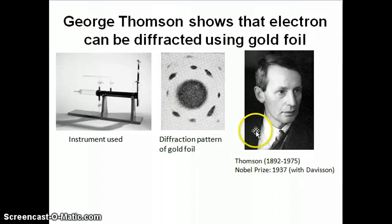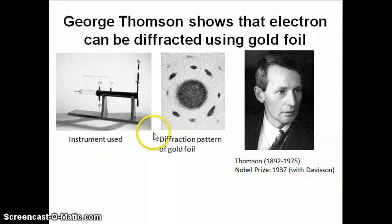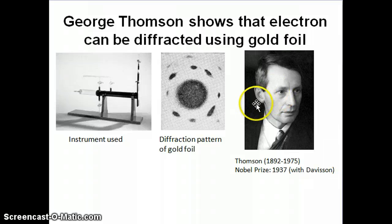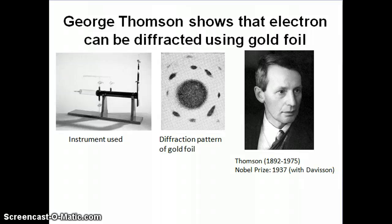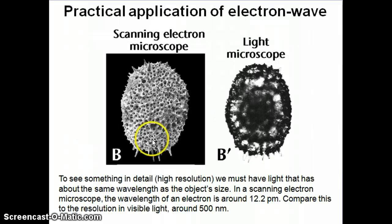As an aside, George Thomson is actually the son of J.J. Thomson. If you remember, we talked about J.J. Thomson back in Topic 2 when we discussed the discovery of the electron — J.J. Thomson worked with the cathode ray to determine that it consists of particles called electrons. So it's a little ironic that the father discovered the electron as a new particle, and then the son showed that the electron is not just a particle but also a wave. They both received the Nobel Prize for their respective discoveries.